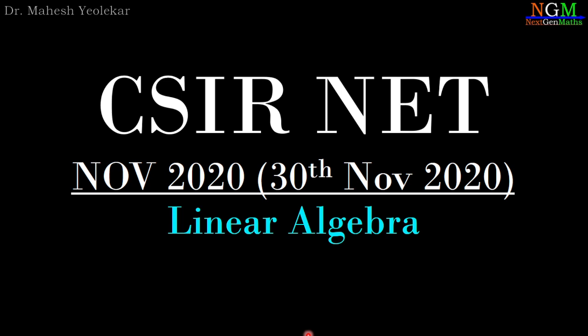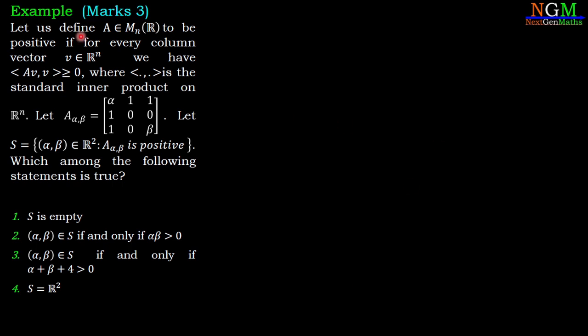In this video we are going to discuss a problem from CSIR-NET November 2020 on linear algebra. We define a matrix A belonging to M_n(R) to be positive if for every column vector v in R^n, the inner product ⟨Av, v⟩ is greater than or equal to zero, where this operation is the standard inner product on R^n.